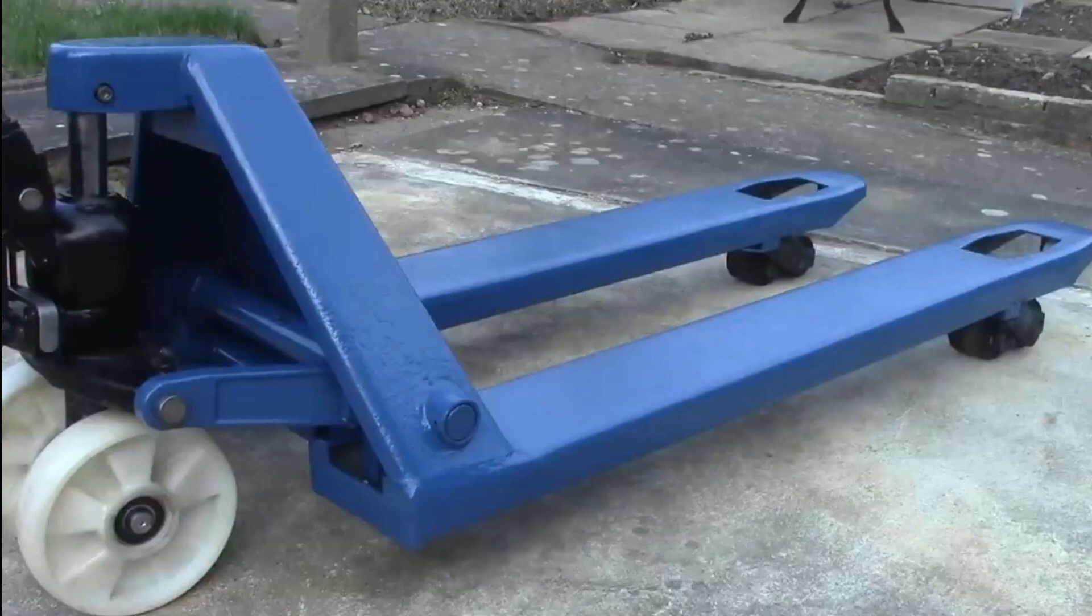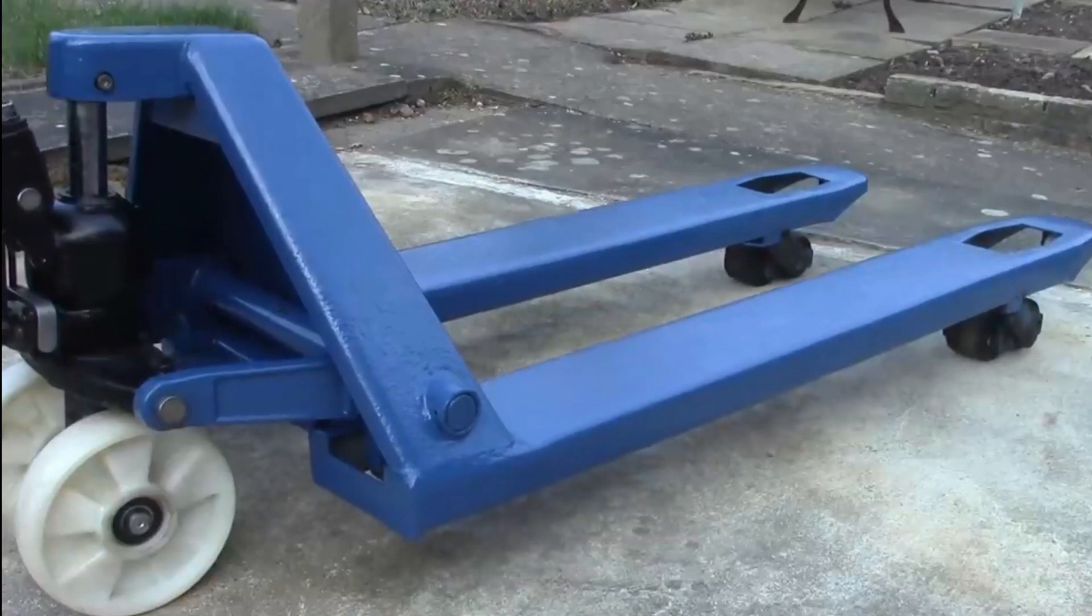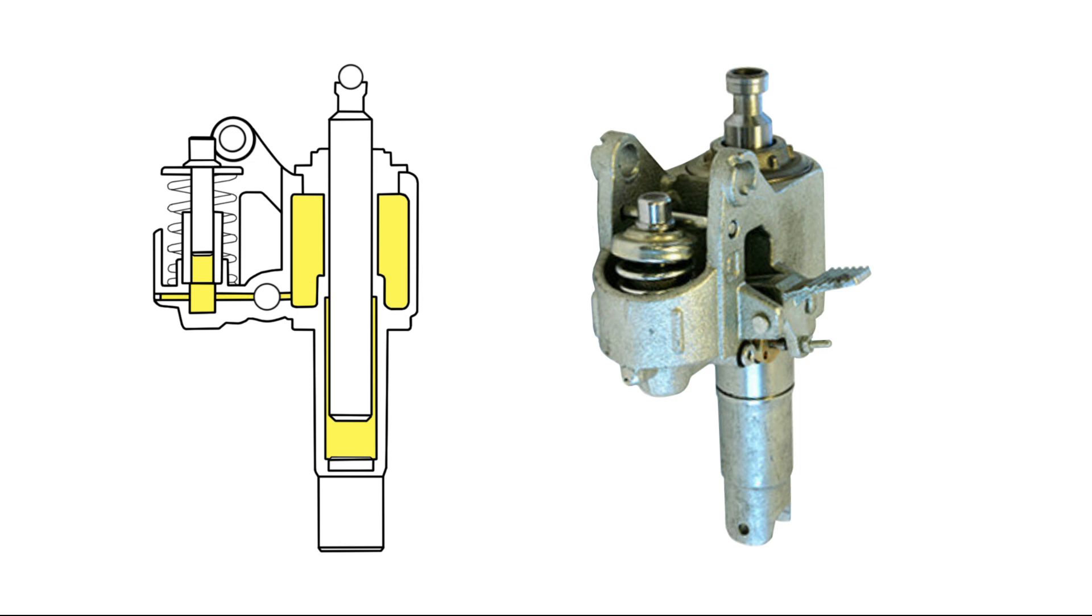Now, let's see how this principle applies to pallet jacks. The hydraulic system in these jacks consists of three primary parts: hydraulic cylinder, hydraulic pump, and hydraulic fluid.